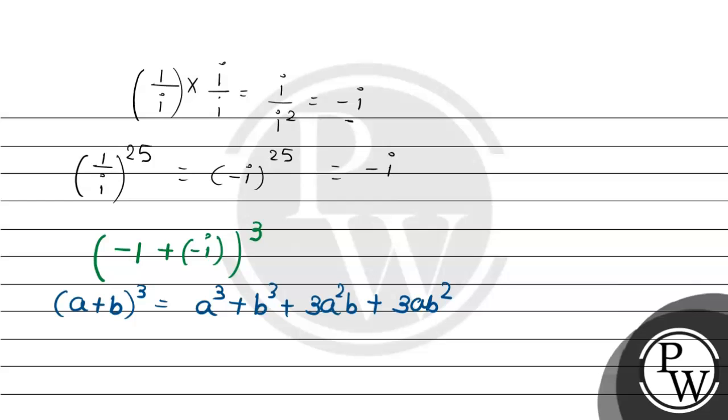So I can write for our expression: minus 1 minus i, entire raised to cube. First, we'll take minus as common. That is, minus in bracket, 1 plus i, entire raised to cube. So that equals minus times bracket: 1 cube is 1, plus i cube, plus 3 times 1 squared into i, plus 3 into 1 into i squared.